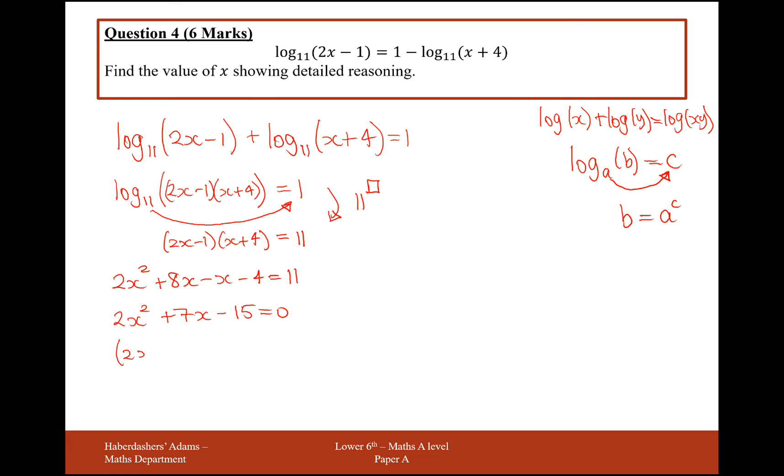Looking to see if I can factorize this. I'll need a minus 3 and a plus 5. That gives me 10x, take away 3x is 7x, and 5 times minus 3 is minus 15. So (2x - 3)(x + 5) equals 0. Great.